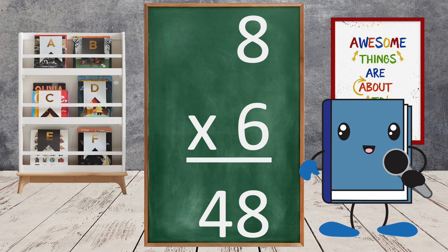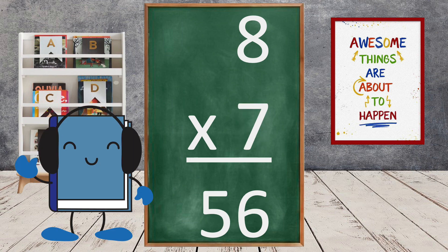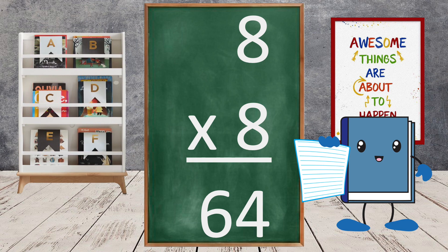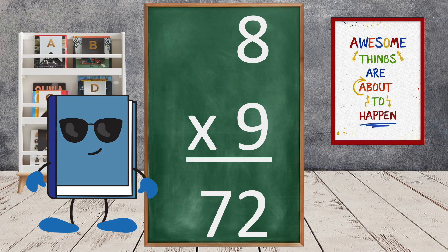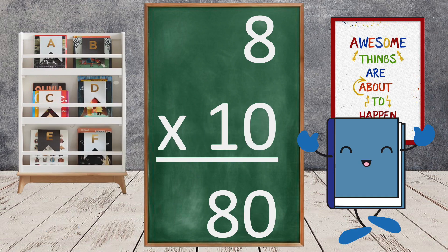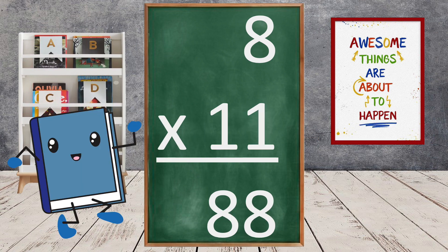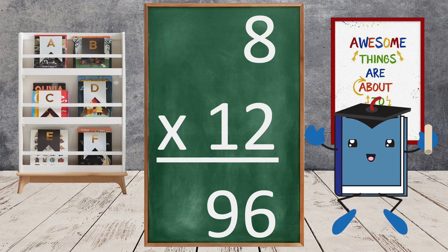8 times 6 equals 48. 8 times 7 equals 56. 8 times 8 equals 64. 8 times 9 equals 72. 8 times 10 equals 80. 8 times 11 equals 88. 8 times 12 equals 96.